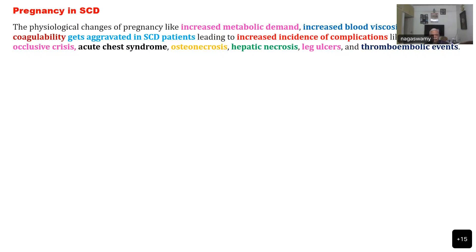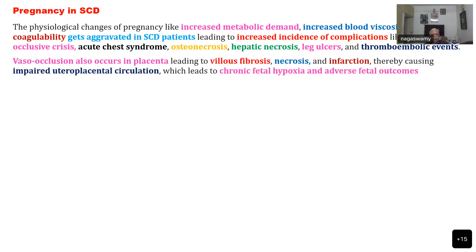The main complications we are worried about are the vasoocclusive crisis, sickle cell crisis, acute chest syndrome, osteonecrosis, hepatic necrosis, leg ulcers, and thromboembolic phenomena. Vasoocclusion occurs in the placenta as well, which can lead to villous fibrosis, necrosis, infarction, and impaired uteroplacental circulation, leading to chronic fetal hypoxia.